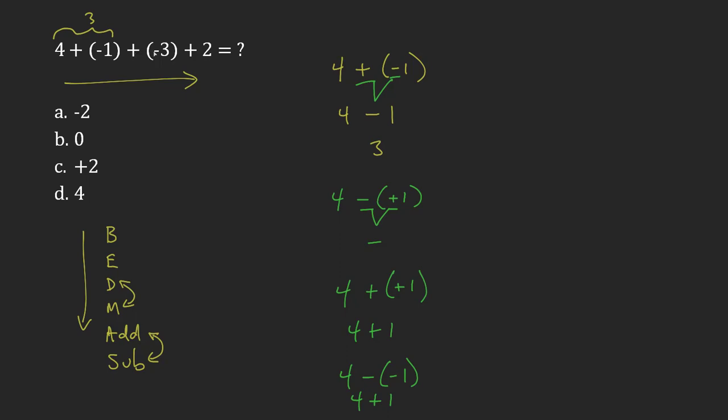Now I'm going to add negative 3. But remember, a positive and a negative—those aren't the same sign. That's the same as minusing 3. And then I'm adding 2. So it's 3 minus 3, which is 0, plus 2 equals 2.